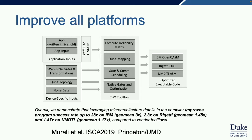I wanted to point out a paper from Margaret Martonosi and my colleague Norbert Linke, where they write a compiler which helps optimize qubit mapping, gates and scheduling, and gate optimization. They apply it to three systems: IBM's OpenQASM, Rigetti, and Norbert's ion trap system at the University of Maryland. What's great about this approach is it actually helps all of them get better—the systems-level approach works for all these things.